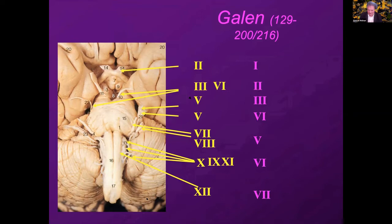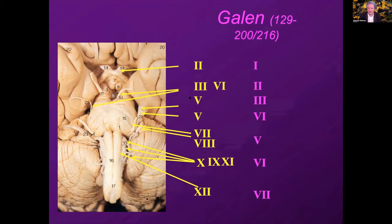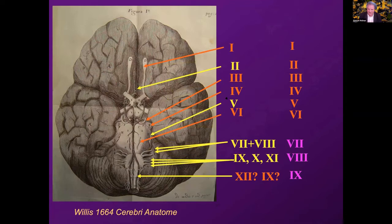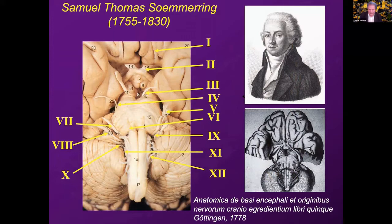Willis also contributed to the nomenclature of the cranial nerves. Before him, Galen described seven pairs and Vesalius extended this. Willis identified all of the cranial nerves, but he put the facial and vestibulocochlear together and the glossopharyngeal, vagus, and accessory in one nerve. He also confused the glossopharyngeal with some of the hypoglossal. Nevertheless, if you look at the drawings, he had all these nerves together. The final numbering was actually established by Sömmering as a medical student in Göttingen, and that is the nomenclature we use today.